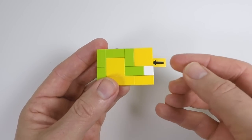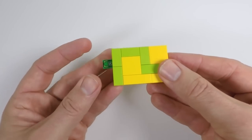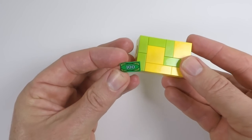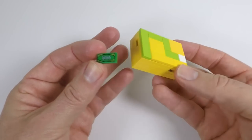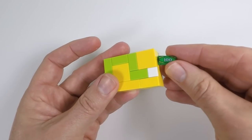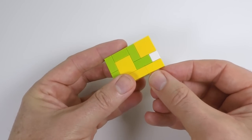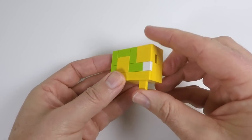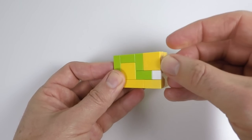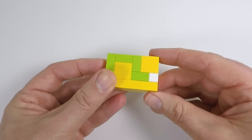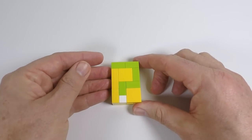So to reset this we just need to push the money back in. We take this one out, we push this one back here, we push that down there, and we pop it in there. And that is the Lego mini puzzle box.